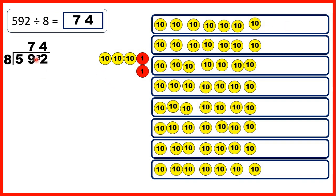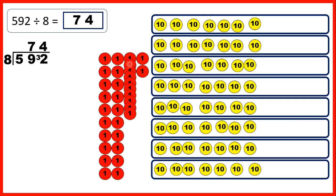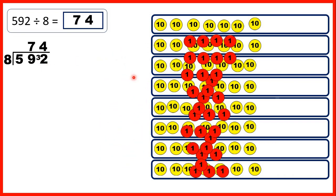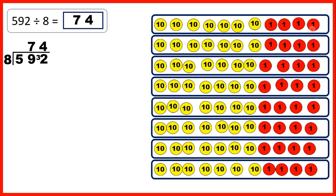We wrote our remainder 3 in front of the ones digit because the 3 remaining tens can be exchanged for 30 ones, giving us 32 ones altogether. When we share those out we get 4 ones in each group, so 4 is the ones digit of our answer 74.